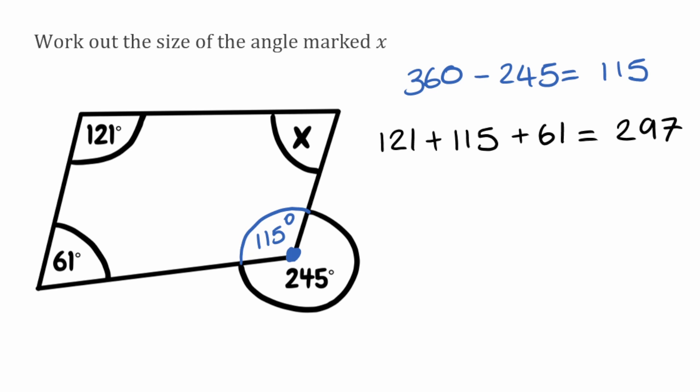And then just like before we know our angles in our quadrilateral are going to add up to 360. So all we're going to do now is take this 297 away from that 360. And when we do that we're left with 63. So for this question our missing angle marked x would be 63 degrees.